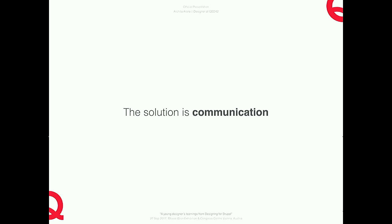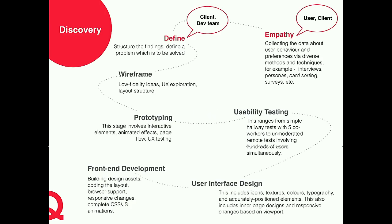Coming to the roadmap: the first section is discovery, where we empathize with the user and the client, understanding user behavior and gathering everything the client wants from the project. Second, we define all the unstructured findings from the empathy stage into a concrete problem to solve. In the first step we interact with the user and client; in the second we also bring in the dev team — because the earlier we let them know the why behind design decisions, the better judgment they'll make at later stages.